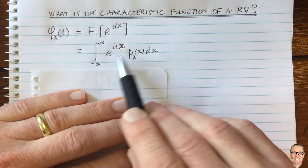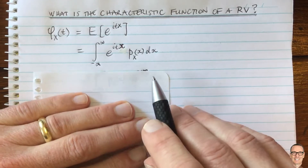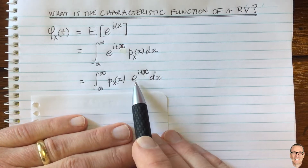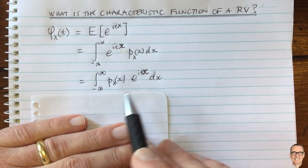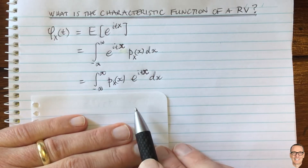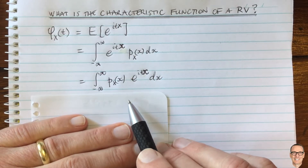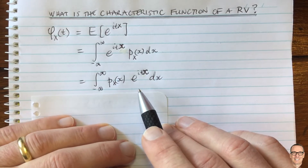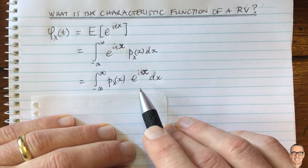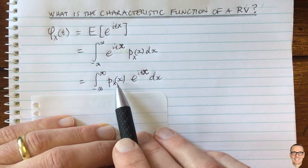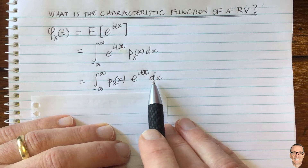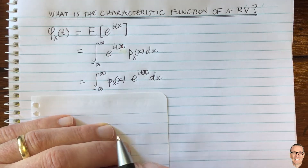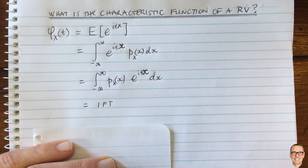Now something we can do is simply swap the order of the probability density function with this exponential function. We'll see then that it looks in a form that's familiar to those of us who are familiar with Fourier transforms. Here we can see this is of the form of the inverse Fourier transform, where instead of having omega, which you have in the inverse Fourier transform, we've now got x. And there's also a scaling of 2π.